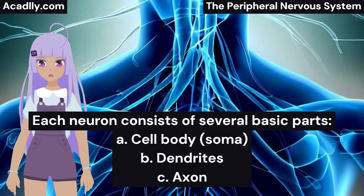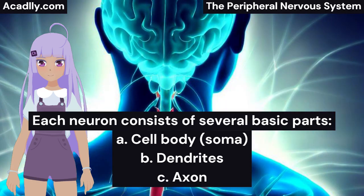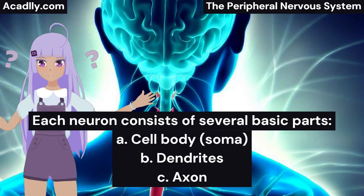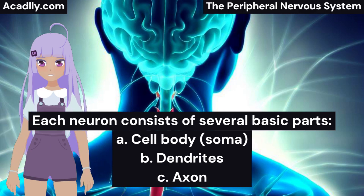C. Axon: This is a long process that branches at the end and terminates at synaptic knobs. Axons carry electrical impulses away from the cell body to their destinations, often over long distances. They may divide into branches, allowing impulses to reach multiple locations. In some cases, an axon is surrounded by a fatty sheath called the myelin sheath, which acts as an electrical insulator and increases the speed of impulse transmission. The myelin sheath is interrupted at intervals by constrictions known as nodes of Ranvier.